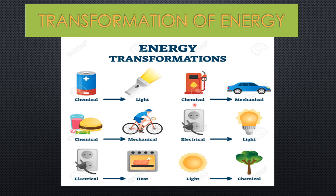Chemical energy from fuel can be used to move a car, to heat up the car, and to light up a car. Electrical energy can be transformed to light energy, which you can see in a light bulb. Light energy from the sun can be converted into chemical energy in the process of photosynthesis.